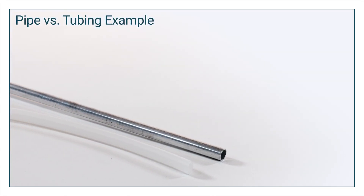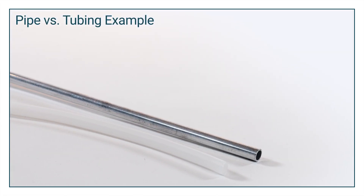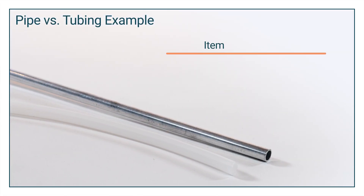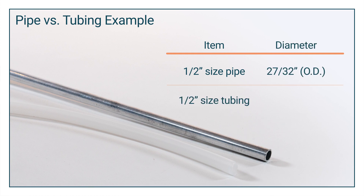Pipes and tubing are measured differently. Tubing is measured and named based on the outside diameter, while PEX, or cross-linked polyethylene tubing, is measured and named using the inside diameter.